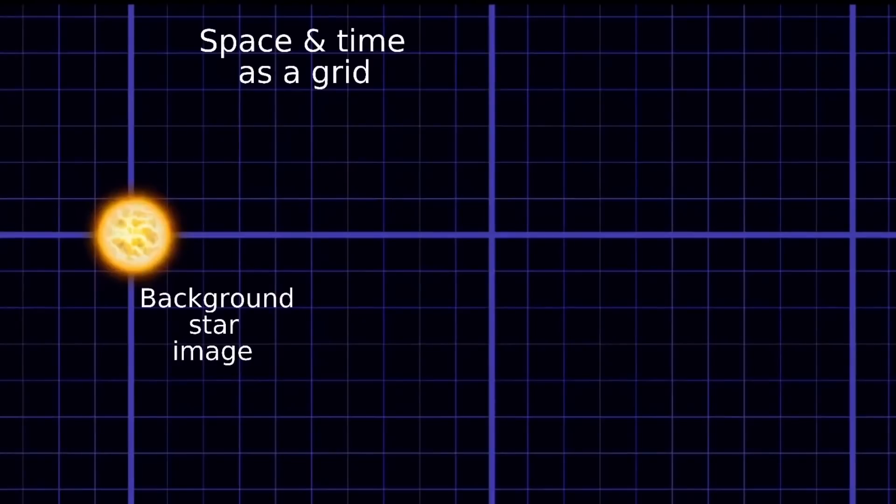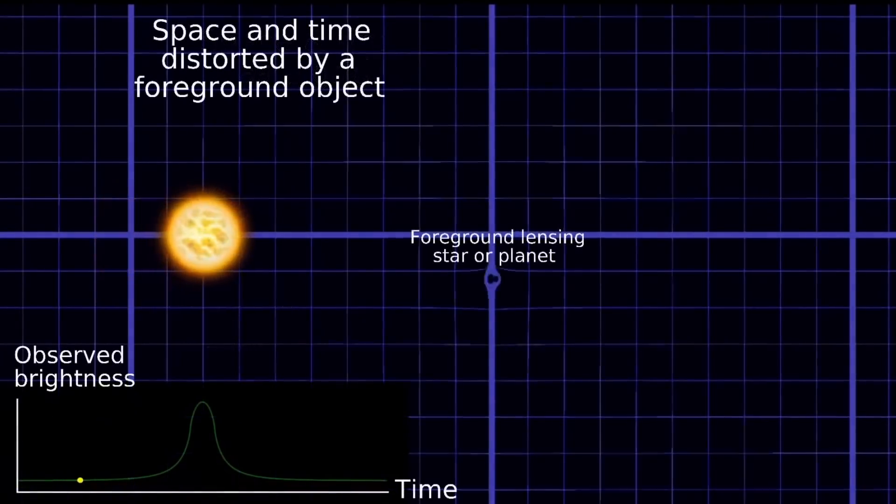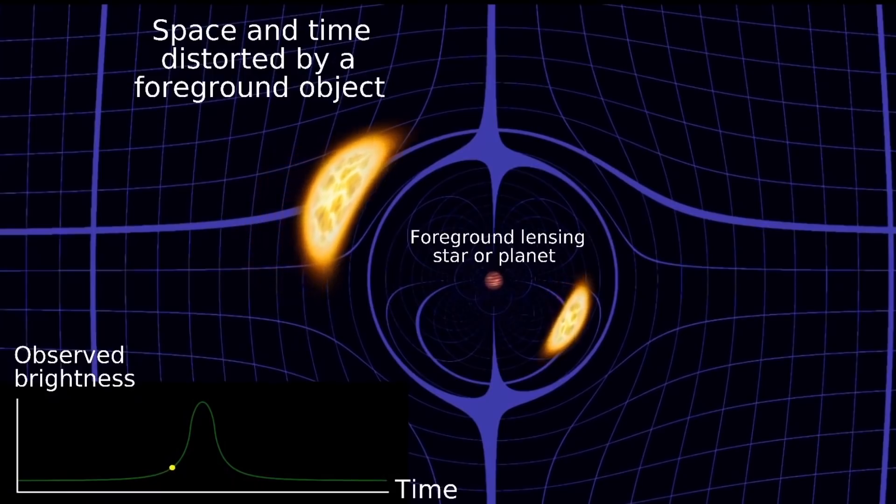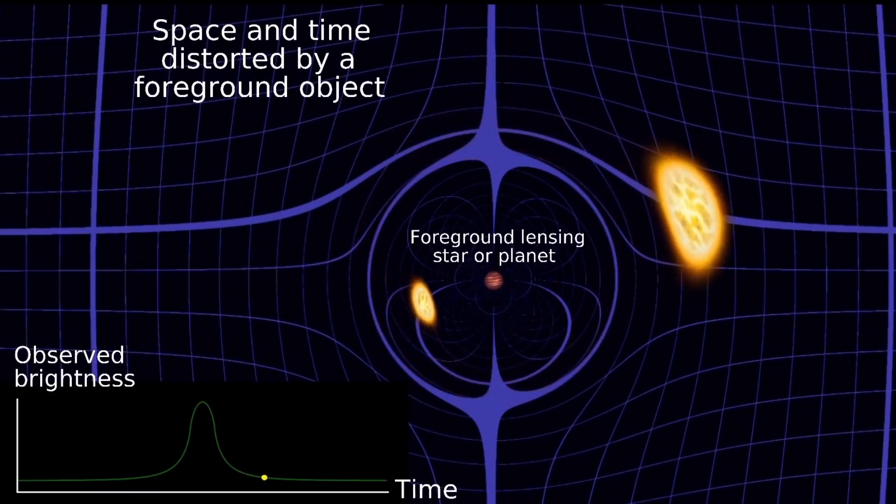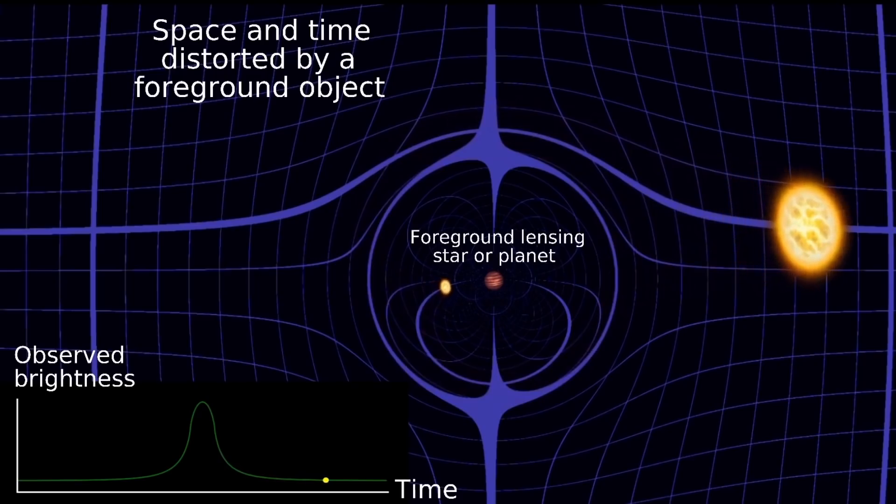And so the scientists behind this study decided to apply an algorithm looking for a very specific observation. When a somewhat bright object passes in front of some sort of mass, it's going to produce the lensing effect with an extremely specific increasing brightness representing the Einstein lens. And depending on the mass of the object, it would last anywhere from a few hours to possibly a few days.